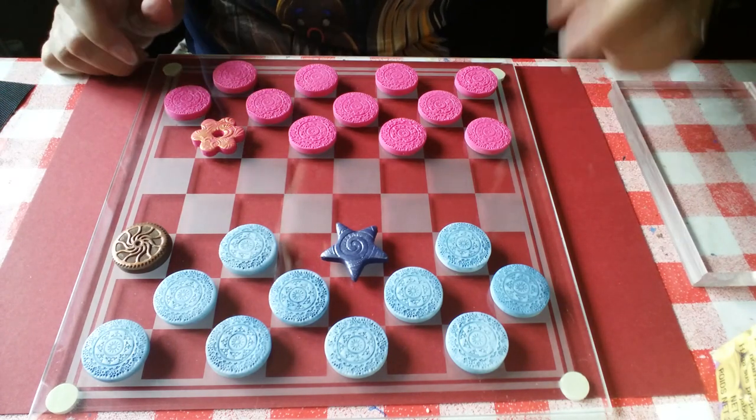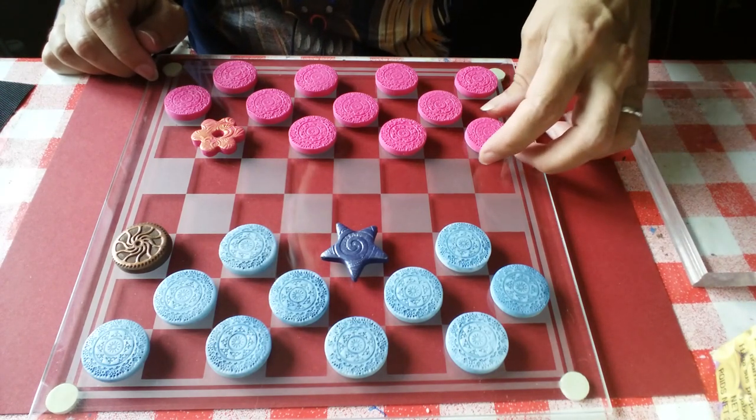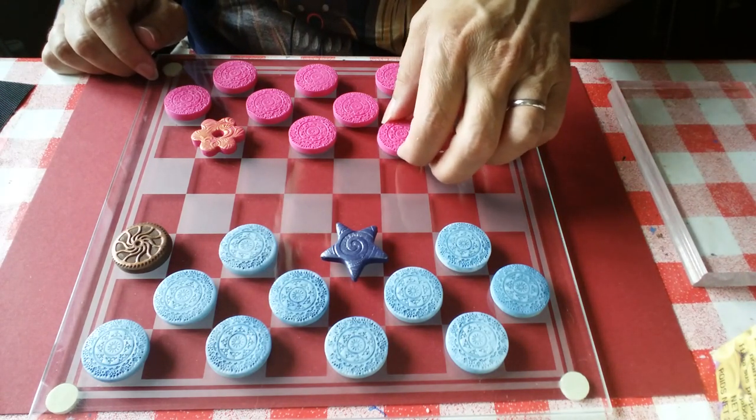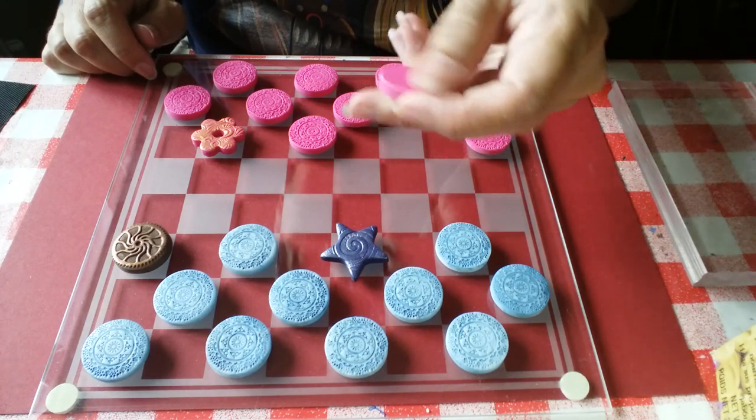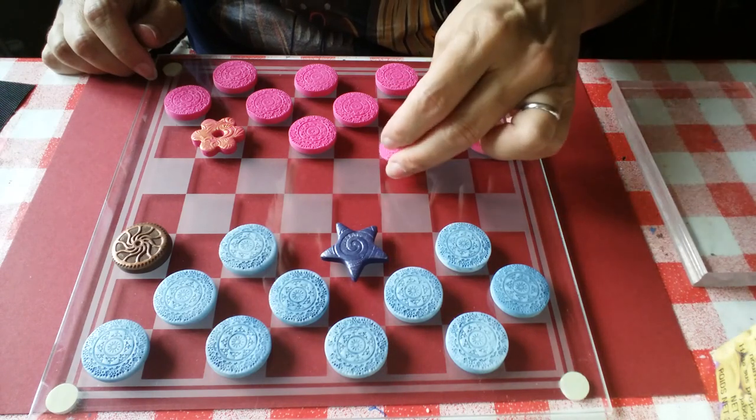So I said, well you know what, I've got a load of polymer clay. I'm sure I can knock up some drafts. So this is a quick tutorial on how to make pieces like this so that you can play checkers or drafts using bits you've made out of polymer clay.